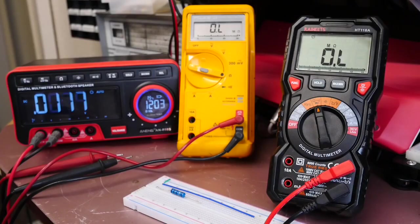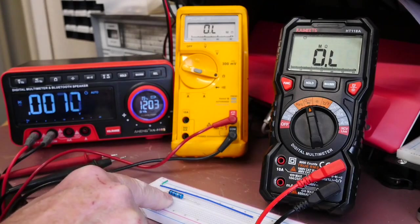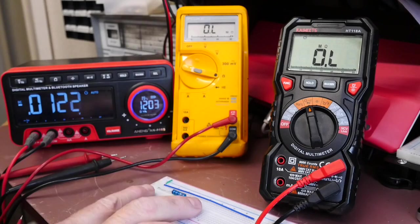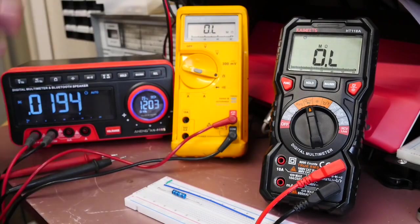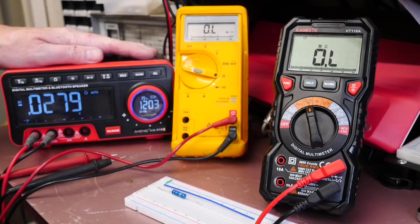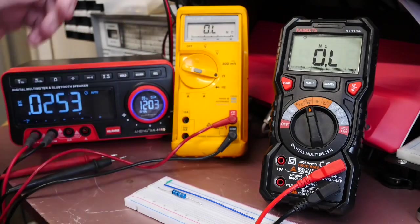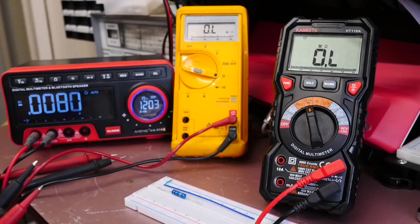Okay so here we are with our mystery resistor and we know it's a very low value. I've just got it mounted on the breadboard here for ease of checking it. I've got a selection of meters here: the Anang 888S, my rather ancient Fluke 23 Series 2, and the Kiwitz HD 118A.